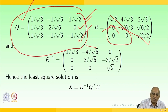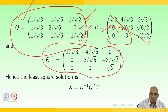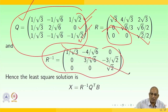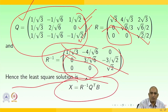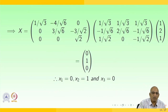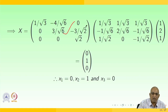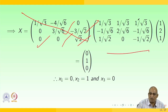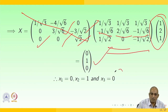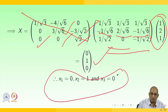We get R inverse as described. The least square solution of the system x₁ + x₂ + 2x₃ = 1, x₁ + 2x₂ + 3x₃ = 2, x₁ + 2x₂ + x₃ = 1, where the coefficient matrix A = [1,1,2; 1,2,3; 1,2,1] and B = [1; 2; 1], is given by X = R⁻¹QᵀB. Computing this product with Qᵀ = [1/√3, 1/√3, 1/√3; −1/√6, 2/√6, −1/√6; 1/√2, 0, −1/√2] multiplied by [1; 2; 1] gives [0; 1; 0]. Therefore X₁ = 0, X₂ = 1, X₃ = 0.